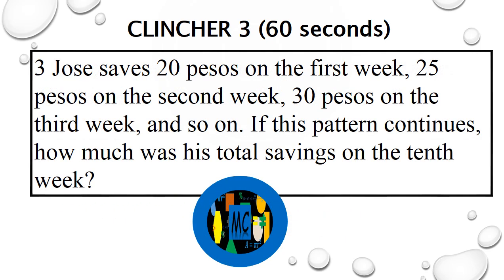Question 3: Jose saves 20 pesos on the first week, 25 pesos on the second week, 30 pesos on the third week, and so on. If this pattern continues, how much was his total savings on the tenth week?